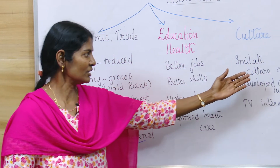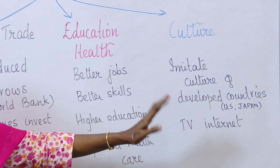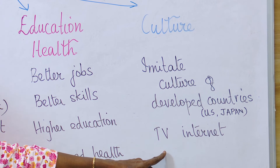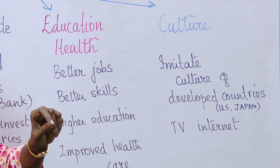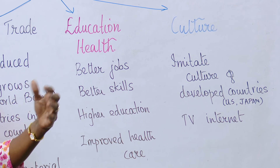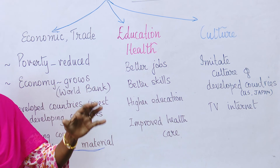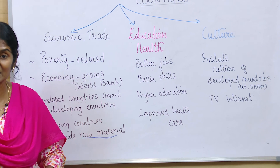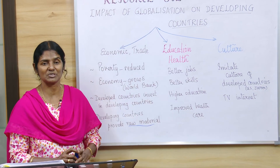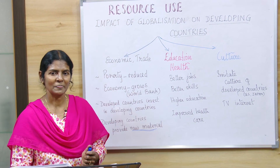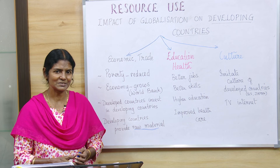The third impact is on culture. People in developing countries imitate the culture of developed countries. Things they were not previously exposed to are now accessible through electronic gadgets like TV and the internet. Even in hilly or forest areas, connectivity exists, allowing people to access and learn about cultural differences. These are the three key impacts of globalization on developing countries. More will be covered in the next video — please like, share, and subscribe.